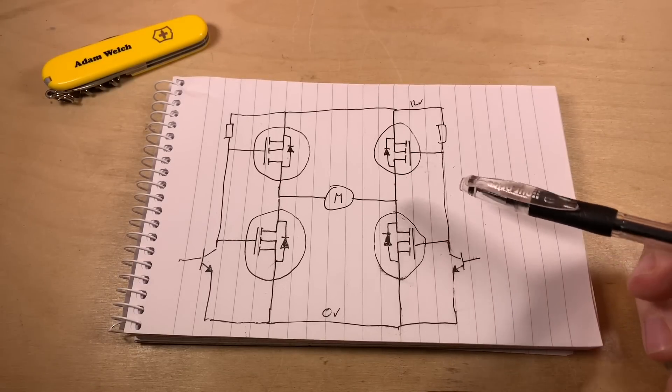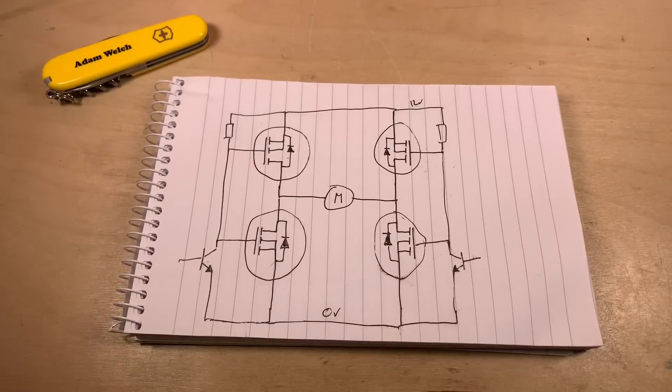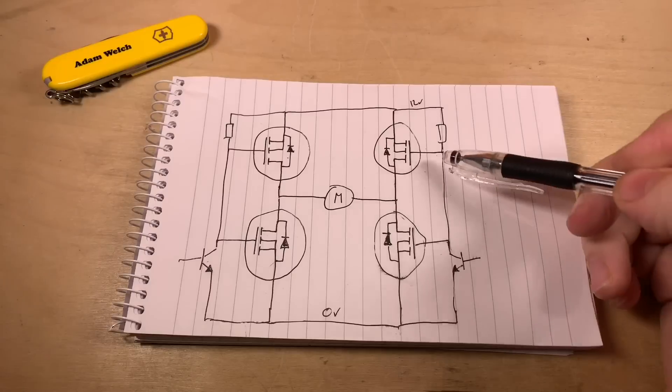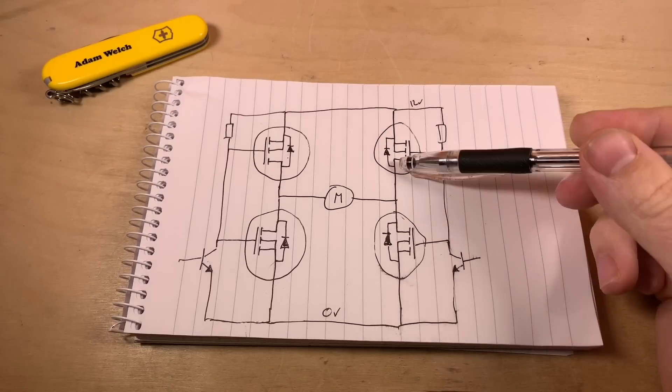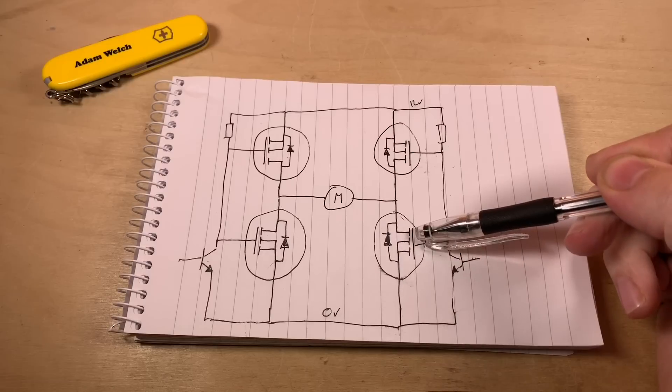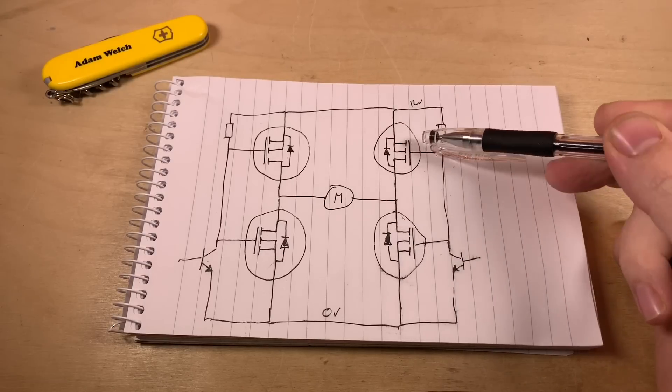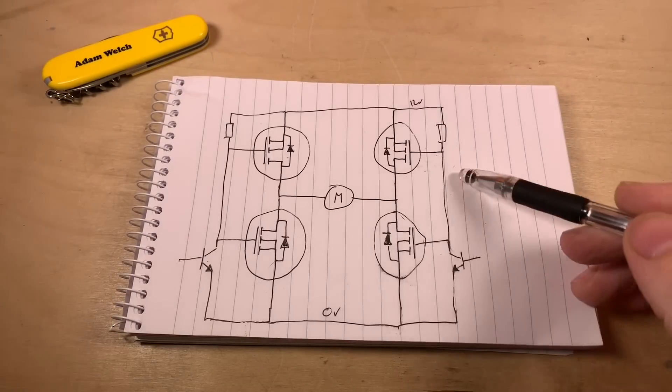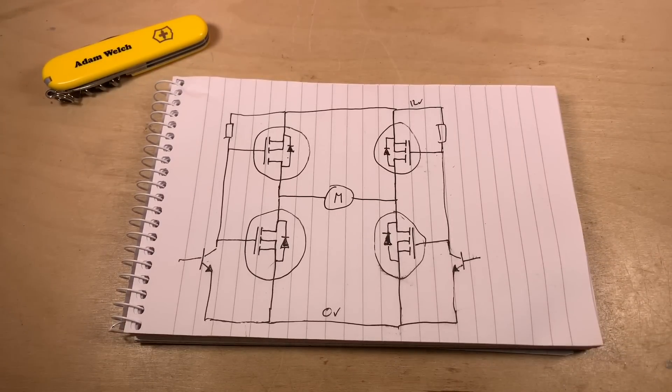But more importantly I wanted to make sure that this P-channel MOSFET and its partner N-channel MOSFET here could never be switched on at the same time and I was hoping by tying the gates together that would prevent that from happening but of course it does exactly the opposite.